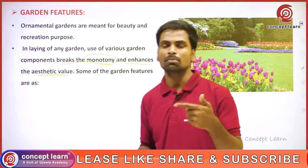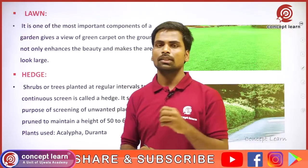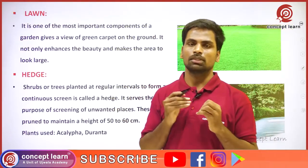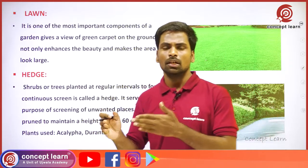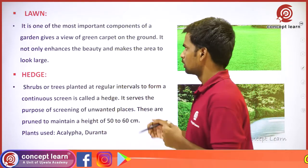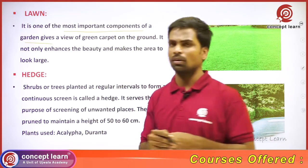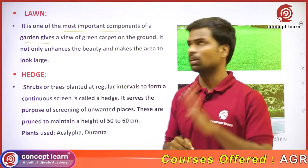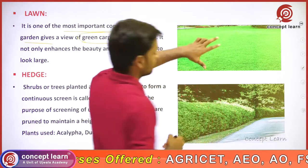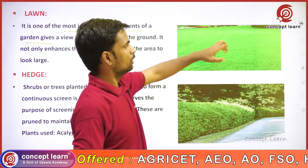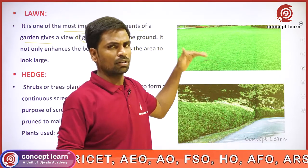Some of the garden features are: first, lawn. Lawn is nothing but the heart of the garden. It is one of the most important components of a garden, so we can call lawn the heart of the garden. It looks like a green carpet. We can observe here — this is one of the garden features. It is a lawn; it is the heart of the garden.